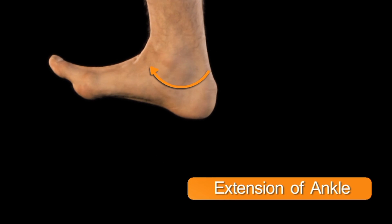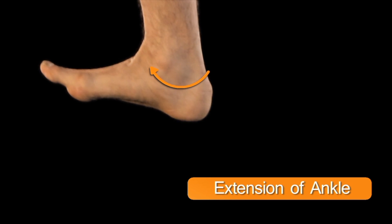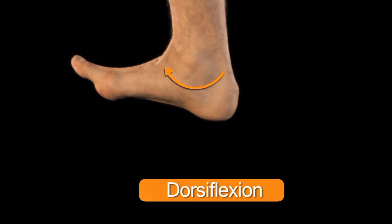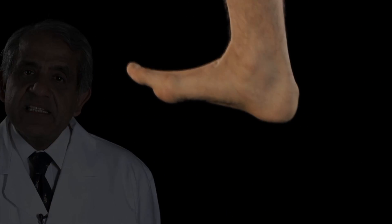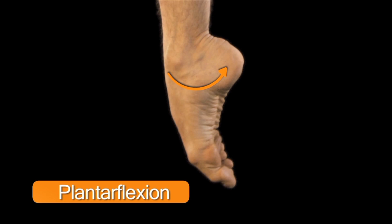Moving further down the lower limb, we come to the ankle joint, which is a uniaxial or hinge joint. The movements possible at the ankle joint are extension and flexion. Extension at the ankle joint, manifest as an upward movement of the foot, is also referred to as dorsiflexion. And flexion of the ankle joint, manifest as a downward movement of the foot, is referred to as plantar flexion.